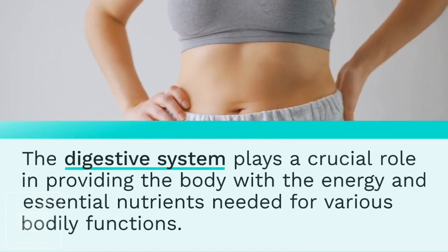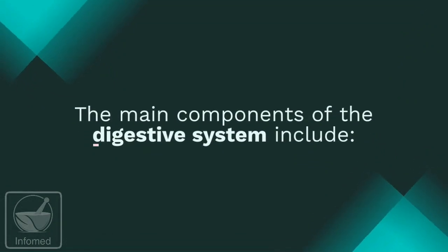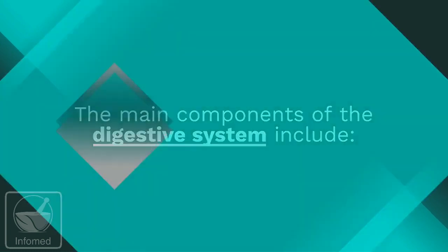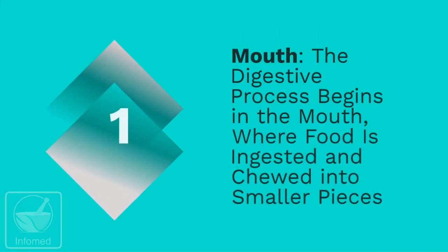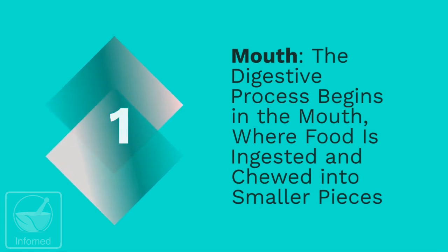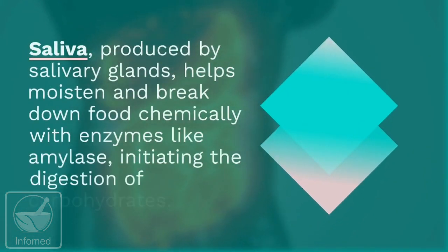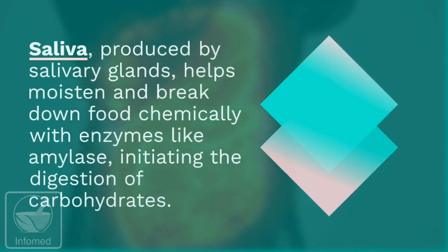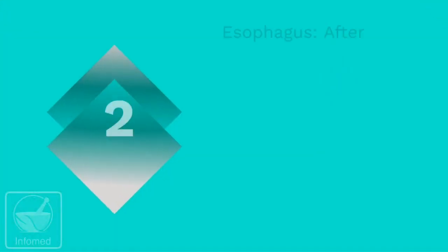The digestive system plays a crucial role in providing the body with the energy and essential nutrients needed for various body functions. The main components begin with number one: the mouth. The digestive process begins in the mouth where food is ingested and chewed into smaller pieces. Saliva, produced by salivary glands, helps moisten and break down food chemically.